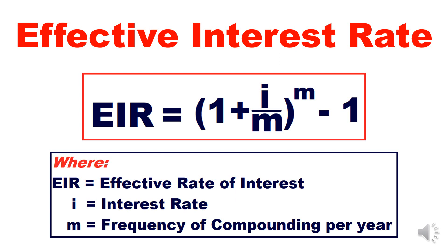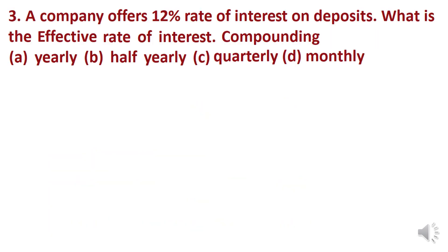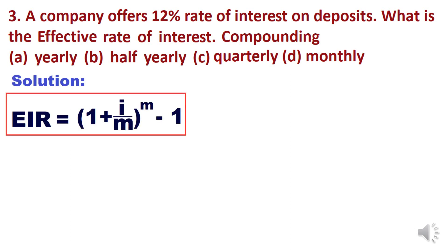The next and last item is effective interest rate calculation. The formula is: EIR = (1 + i/m)^m − 1, where EIR is effective rate of interest, i is the interest rate, and m is the frequency of compounding per year. Let's apply this to a 12% rate of interest, calculating the effective rate when compounding is yearly, half-yearly, quarterly, and monthly.